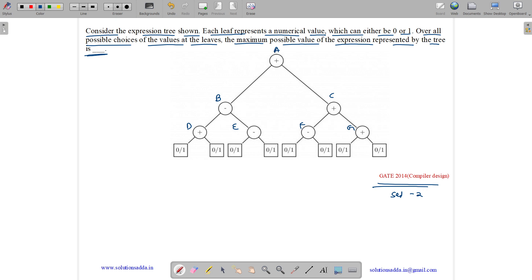What is the value of A? We need to maximize A. A is B plus C. When is A maximum? A is maximum when B and C are maximum, which means we must maximize B and we must maximize C.